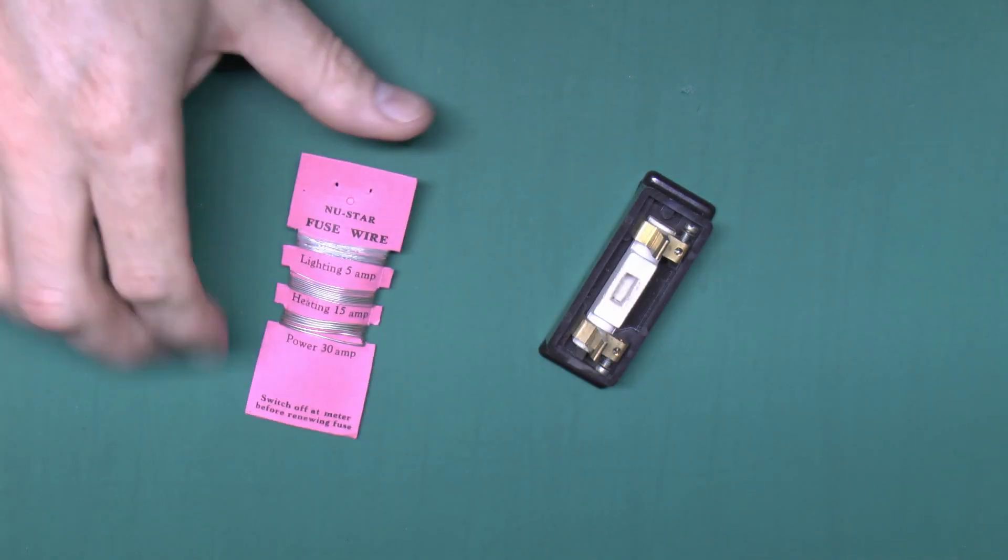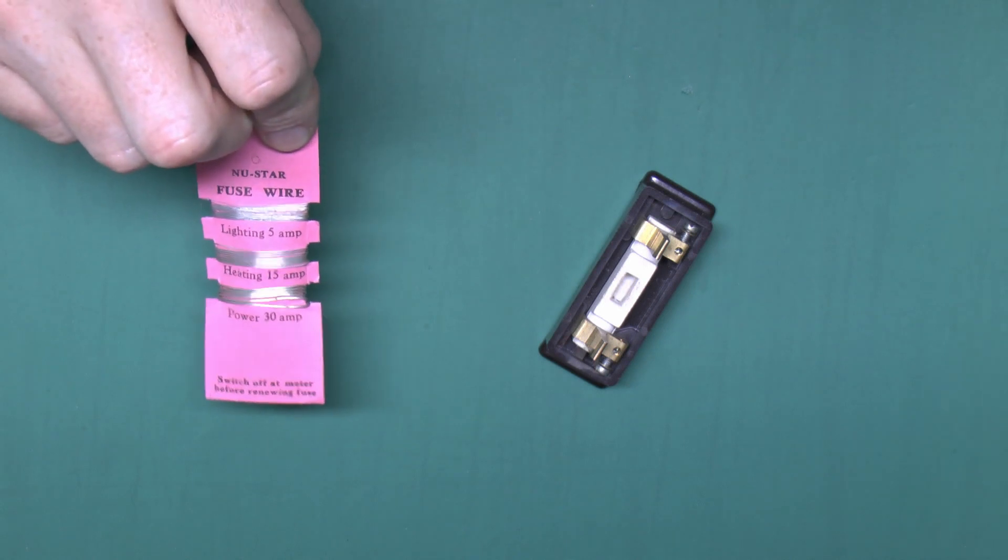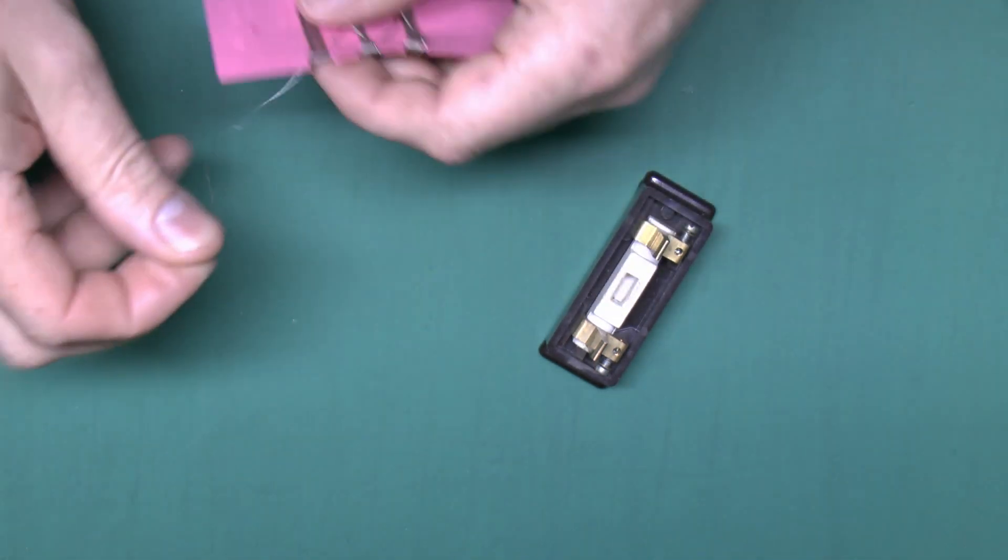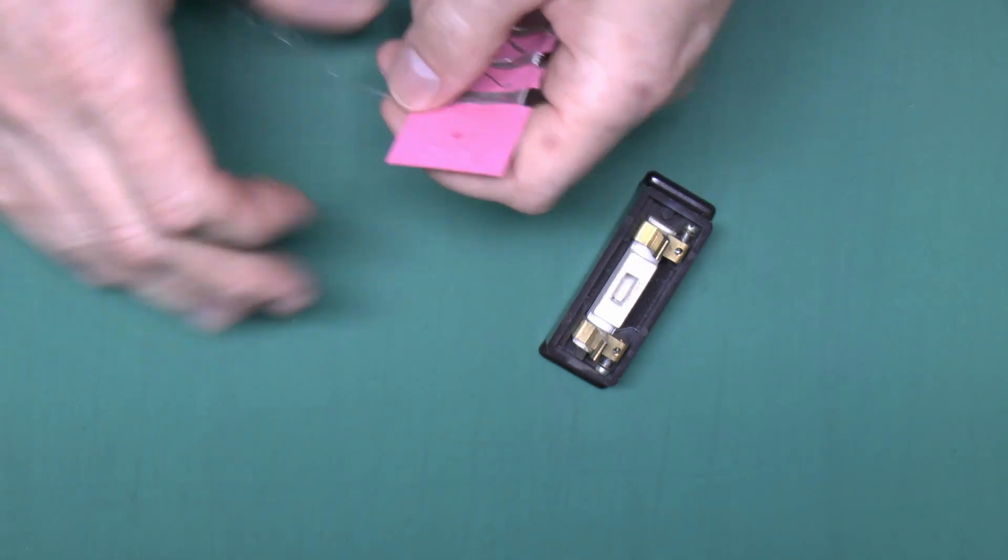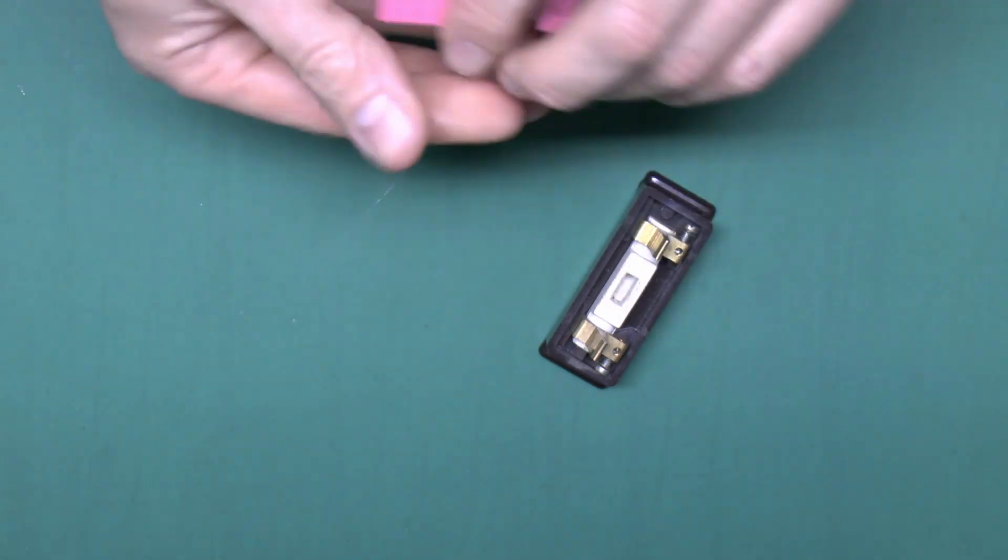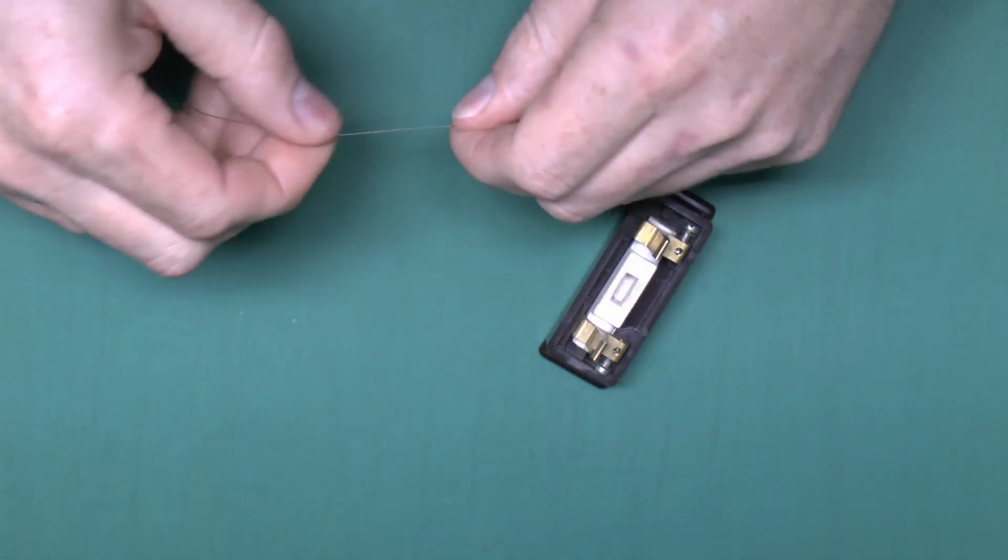Next we need to get the new wire. This is a very typical card, three values on there. Obviously it's important to get the correct size of wire. This is a 5A carrier, so obviously we're using 5A wire to put in there. So just take off a length of that and straighten it out.